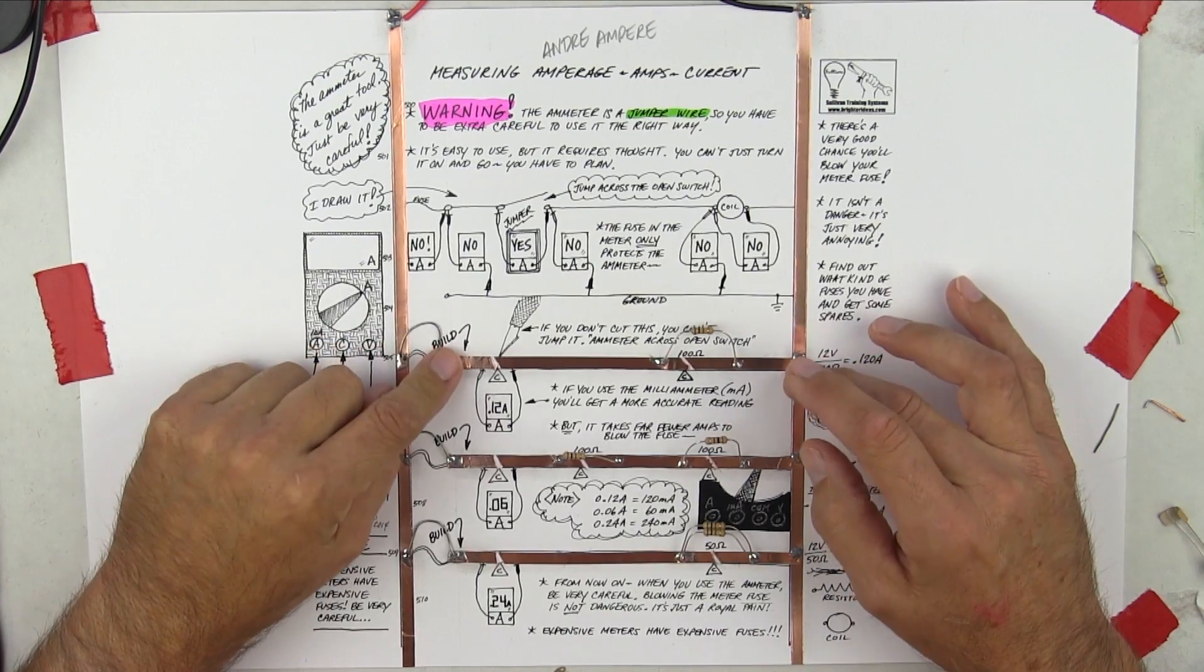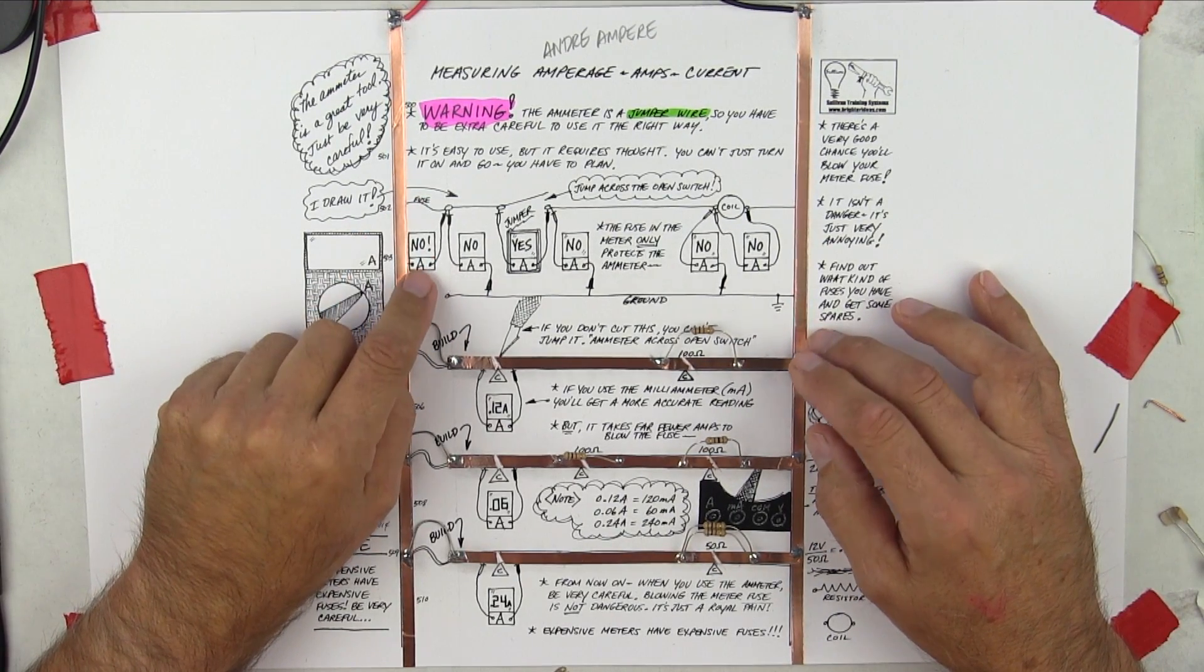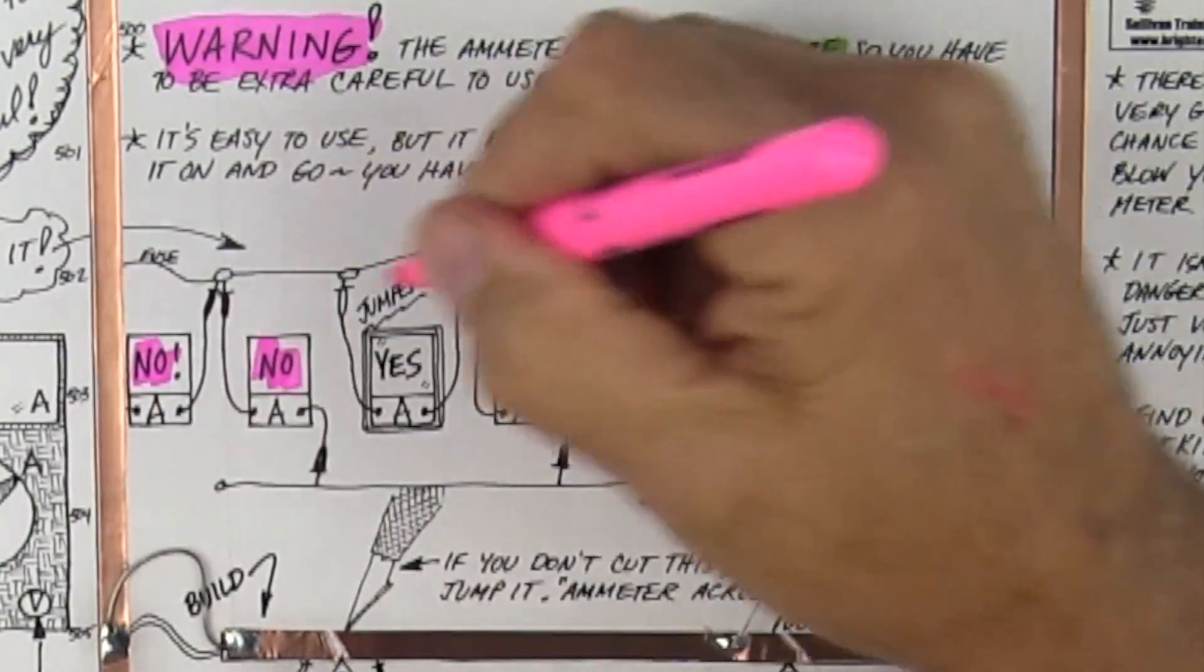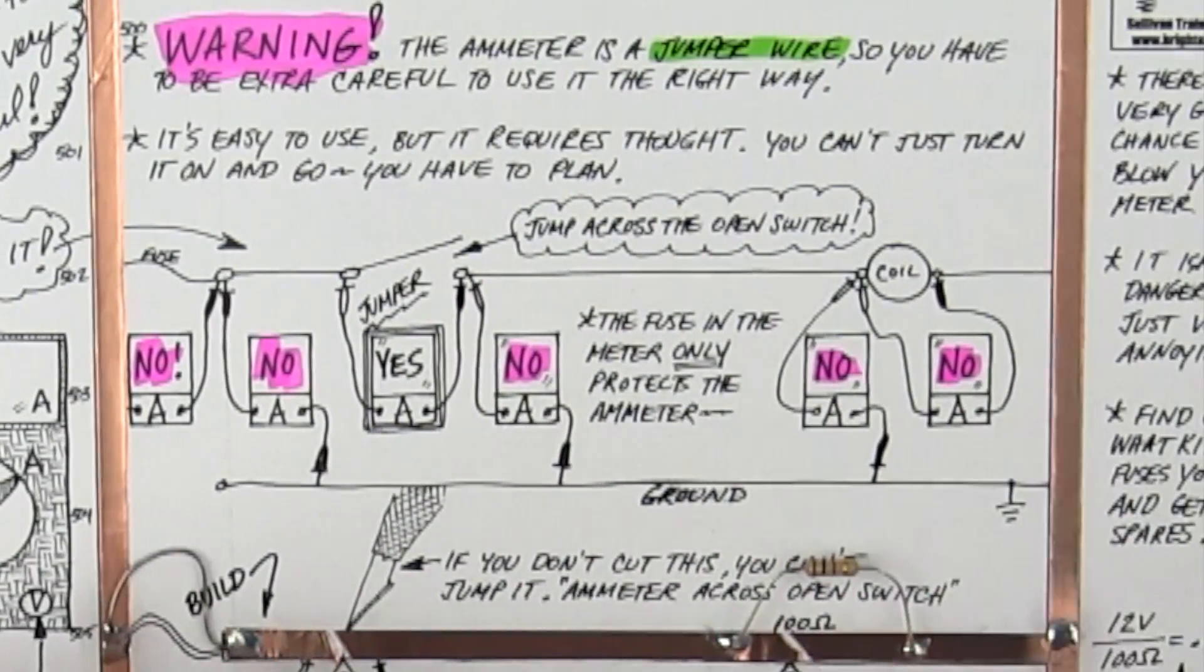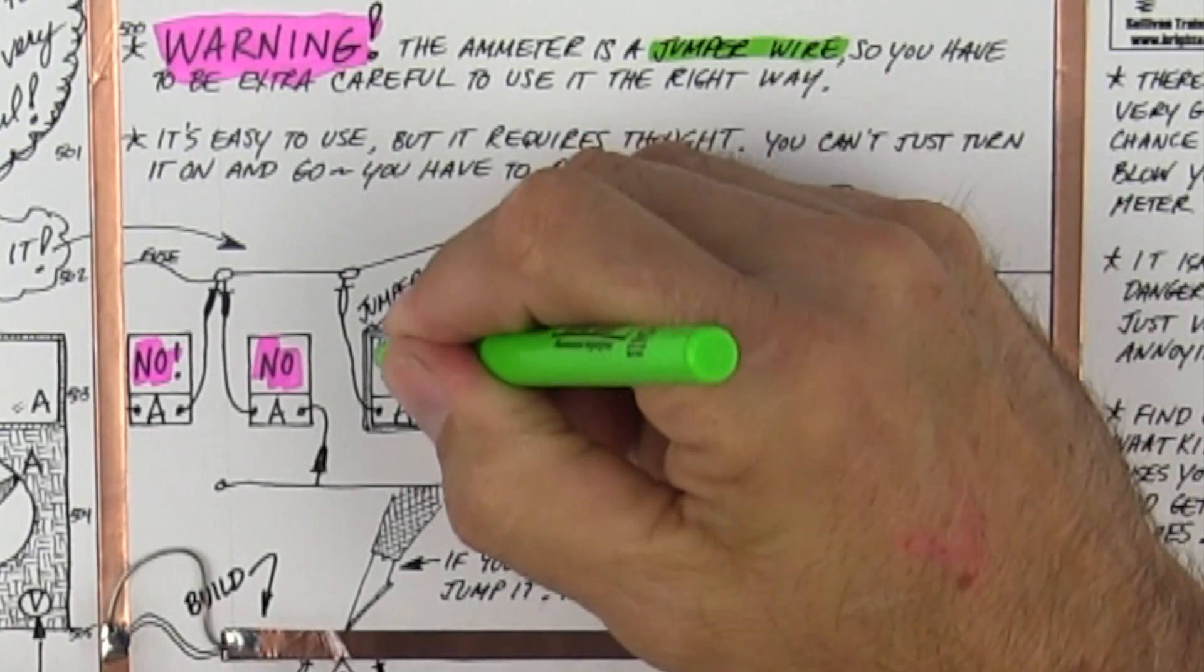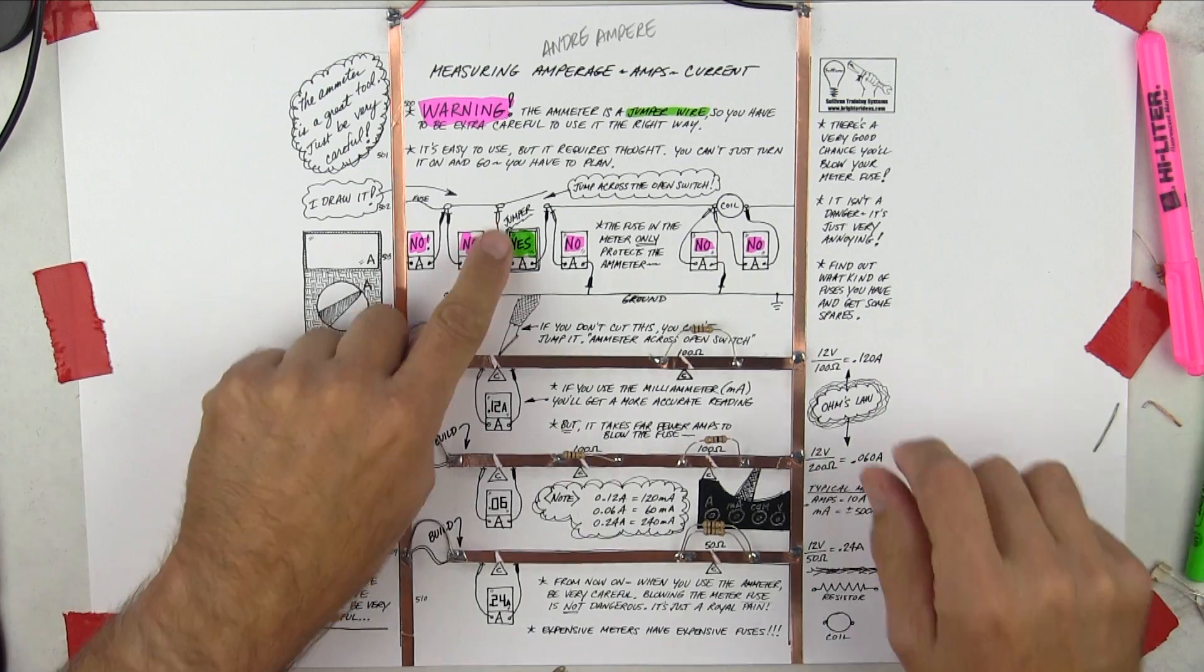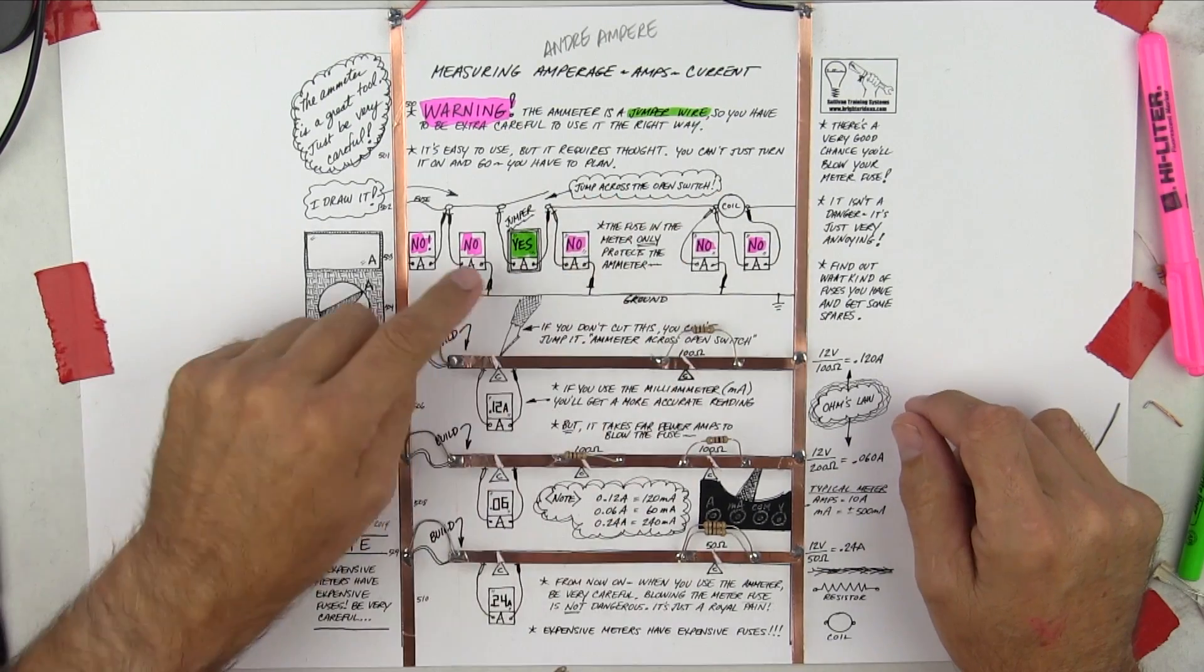All right, now what I've got is I've got the indications here. Notice that there are one, two, three, four, five places where you do not use the amp meter in this particular circuit and one place where you do, because it's a jumper wire. What you want to do in this case is jump across the open switch.